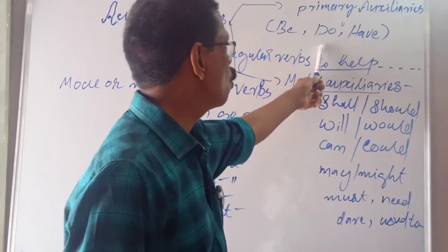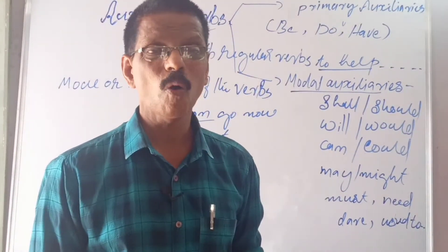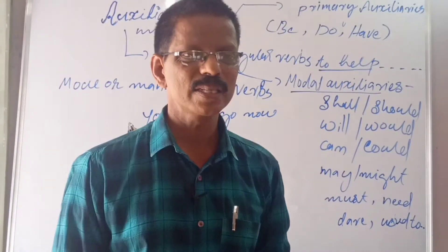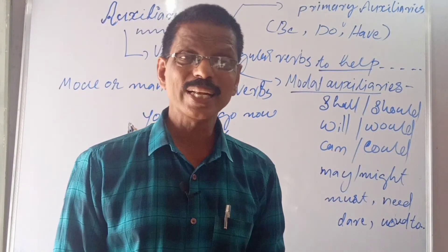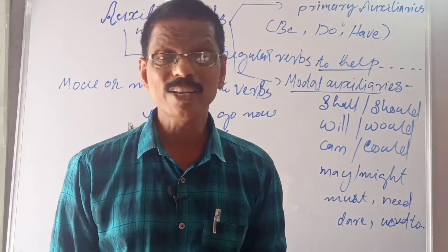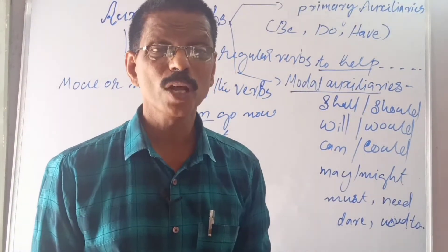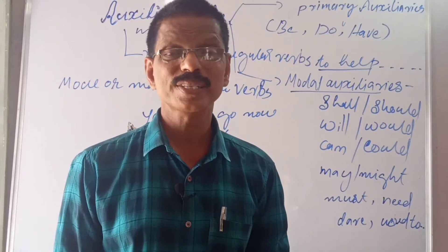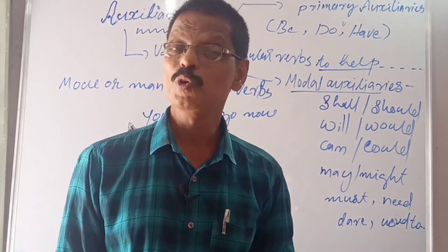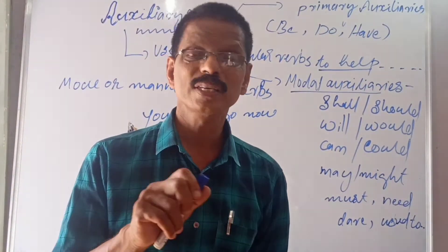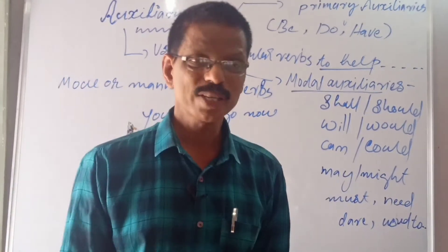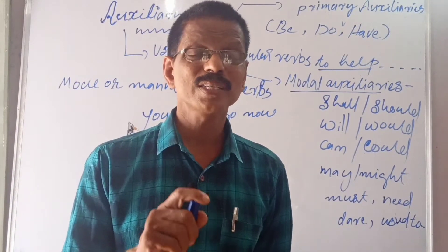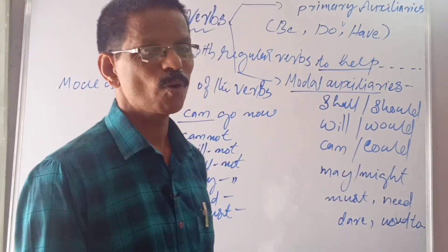Be, do, have — these are primary auxiliaries. What is the difference between primary auxiliaries and modal auxiliaries? Primary auxiliaries can be used as finite as well as auxiliary verb. Finite means regular verb having V1, V2, V3. For example: 'Did you do your homework?' — first 'did' is auxiliary, 'do' is finite. That is why they are known as primary auxiliaries.